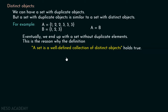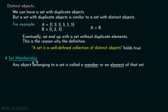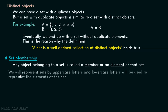Now you have understood the term set. A set is a well-defined collection — it must be well-defined — and apart from this, there must be distinct objects within it. Now let's try to understand the meaning of set membership. Any object belonging to a set is called a member or an element of that set. We will represent sets by uppercase letters and lowercase letters will be used to represent the elements of the set.